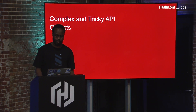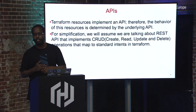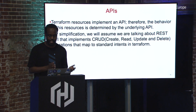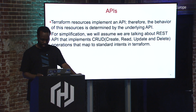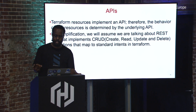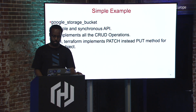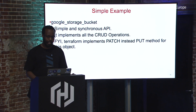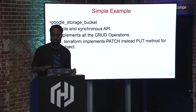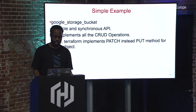The other topic is complex and tricky API objects. Terraform implements an API — if there isn't an API, it can't be managed by Terraform. For simplification, we'll assume we're talking about a REST API that has the standard methods: create, read, update, and delete. A simple resource in Google Cloud is the storage bucket — it's a very simple, synchronous API with no long-running operation, so when you run terraform apply it executes right away.